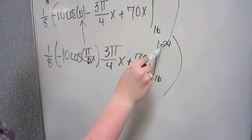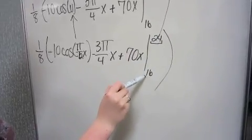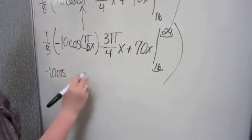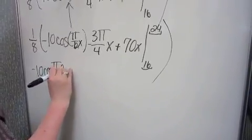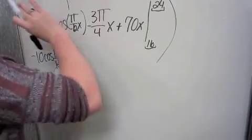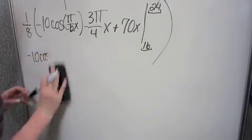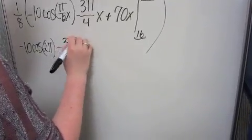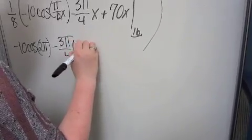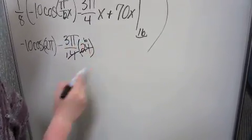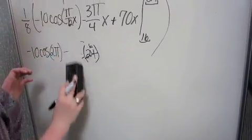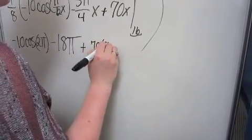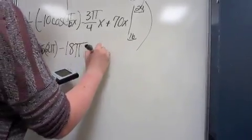Then, we have to plug in 24 for x minus the value of 16 plugged in for x. So, that becomes negative 10 cos(π over 12 times 24), which we can cancel to make 2π, minus 3π/4 times 24, which comes out to 1 sixth. So, 3 times 6 is 18. Plus 70 times 24. 70 times 24, which is 1680.